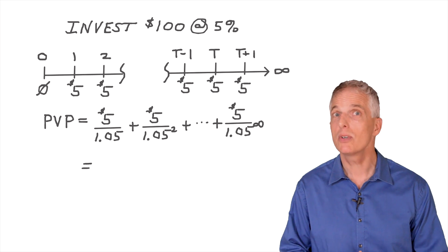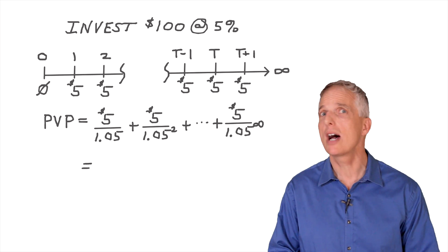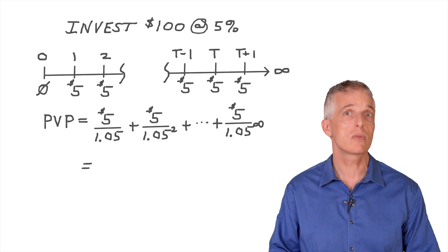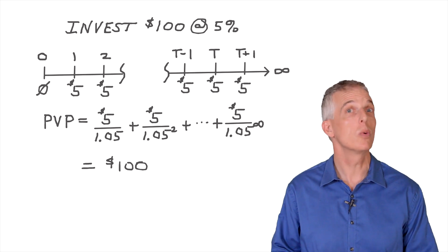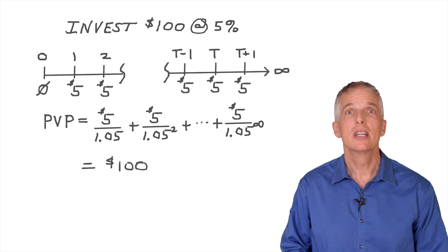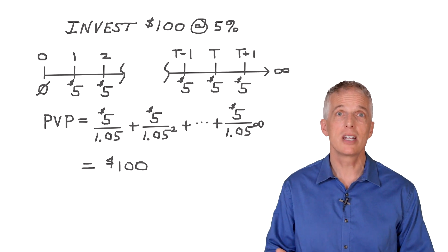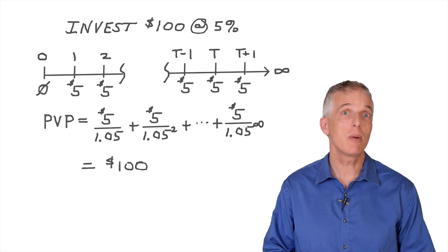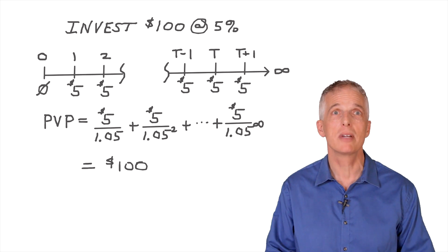On some reflection, you might realize that the promise of these $5 payments forever when interest rates are 5% is worth $100. Why? Because if I invest $100 today at a 5% interest rate, I will generate an infinite stream of $5 payments each year. This logic is sound, but how can I prove this mathematically?